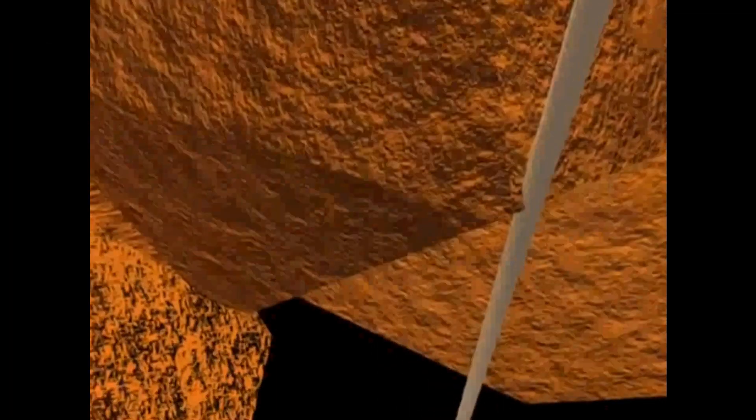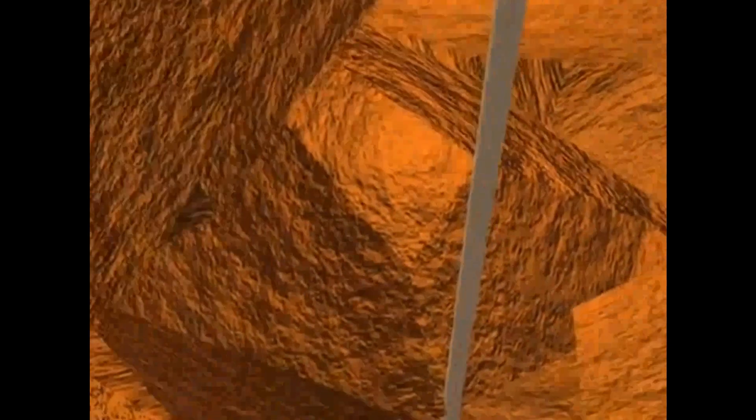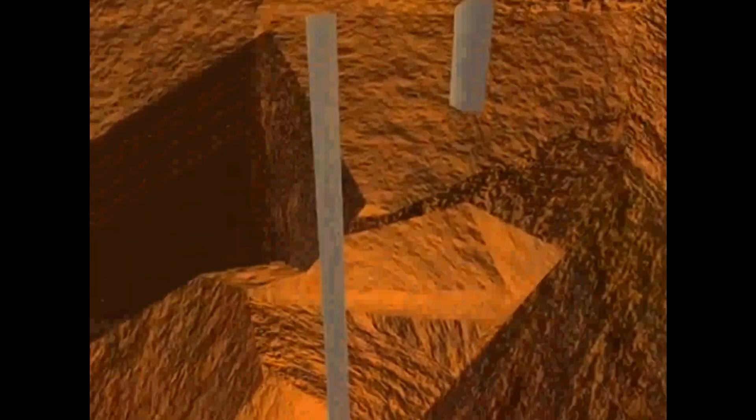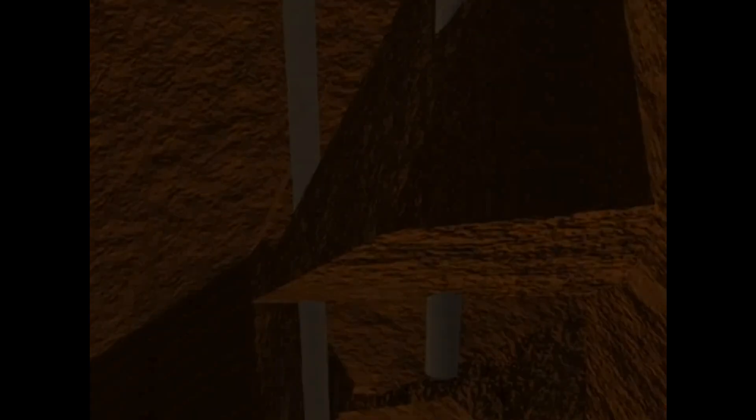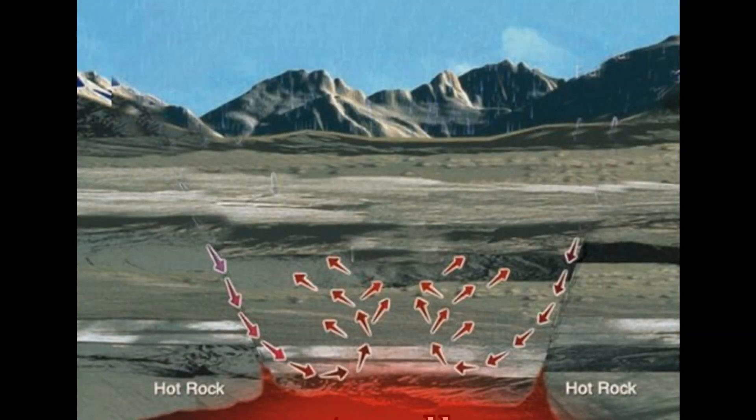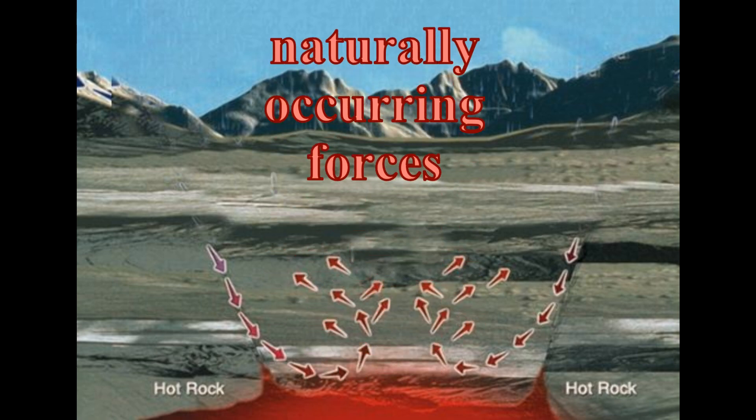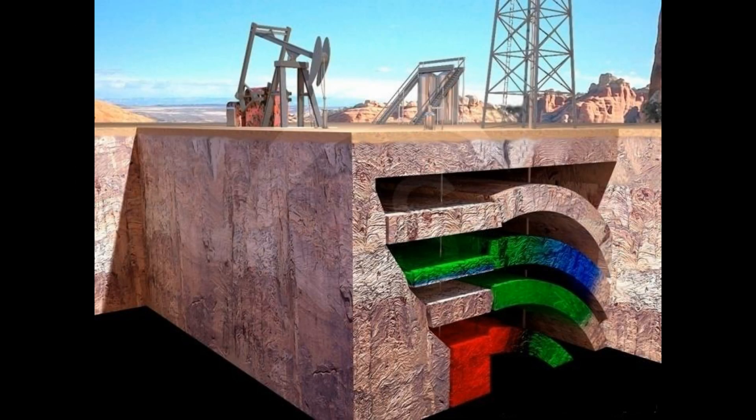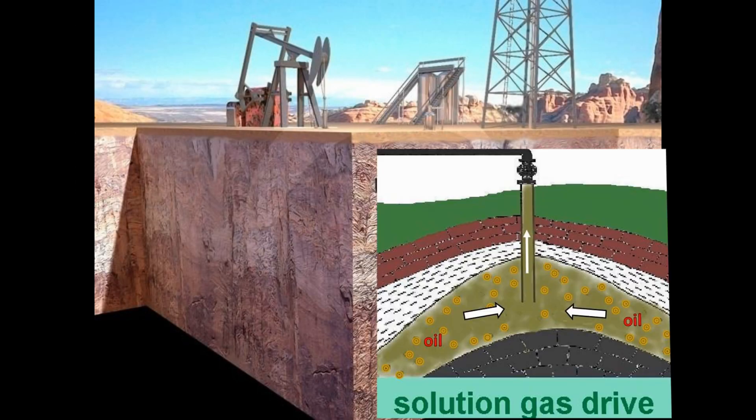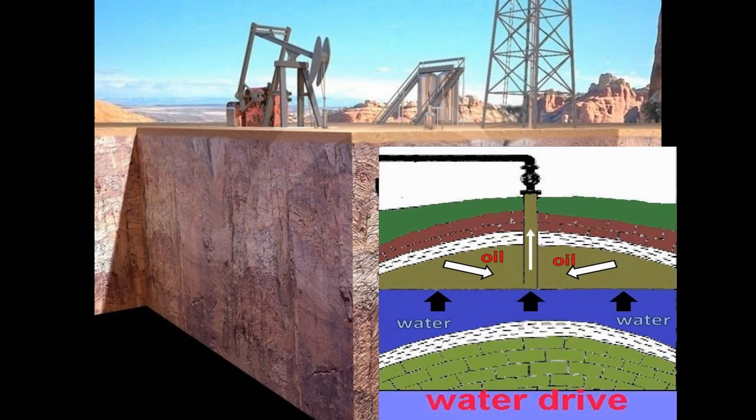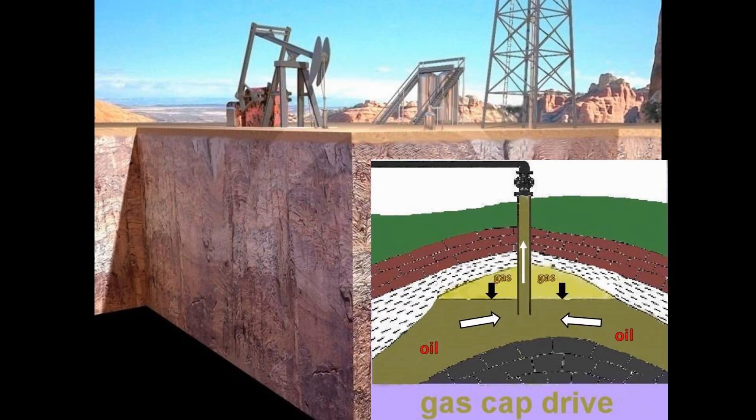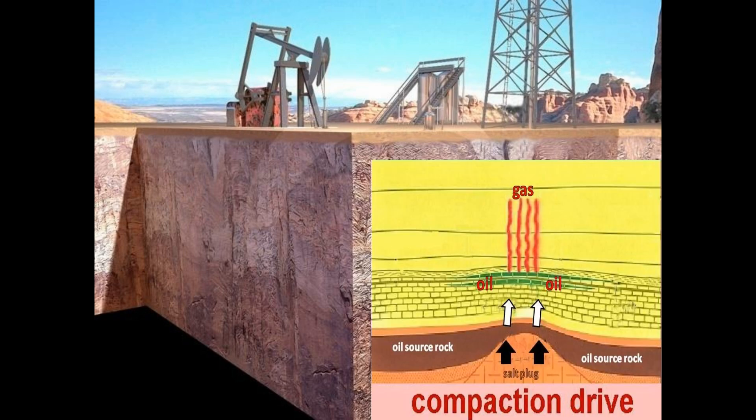Secondary or tertiary recovery processes are often referred to as pressure maintenance or enhanced oil recovery. In either primary or EOR recovery drives, a source of energy is required to push the oil to the surface. In primary recovery, the energy is supplied by naturally occurring forces that come from within the Earth and are referred to as natural energy. There are five major sources of natural energy. They are solution gas drive, water drive, gas cap drive, gravity drainage, and compaction drive.